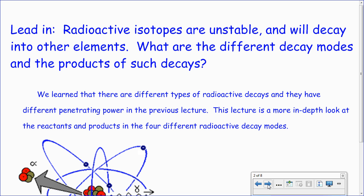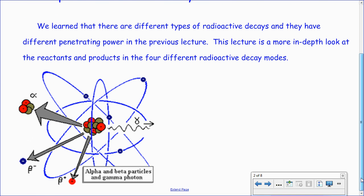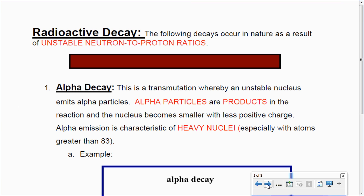What are the different decay modes and the products of such decays? How do they get there? We saw a little bit on table O in our last video about the symbols used in nuclear chemistry. We're going to see how those start to apply into a nuclear equation. We learned there are different types of radioactive decays, like alpha, beta, gamma, positron emission, and the different penetrating power.